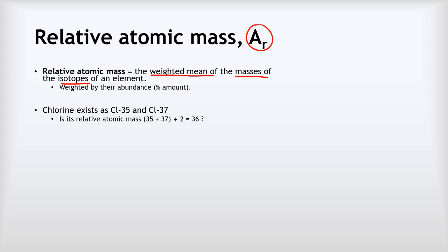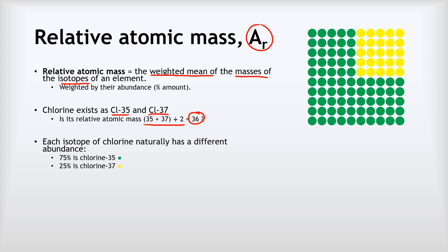Let's look at chlorine. Chlorine exists as two isotopes, two main ones, chlorine-35 and chlorine-37. You might think the mean of those two masses would be 35 plus 37 divided by 2 to give you 36. That's kind of true, but the problem with that calculation is it doesn't take account of the fact that naturally we have different amounts of each isotope. 75% of chlorine atoms are chlorine-35, the green ones in this diagram up here, whilst only 25% of them are chlorine-37. So what we have to do is we have to weight our mean by the abundance, by the percentage amount of each one, so that the more common isotopes make a bigger contribution to the relative atomic mass than the less common ones.